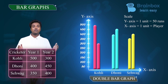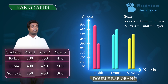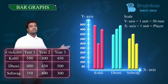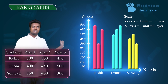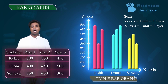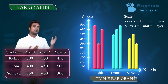But what if you also have to analyze the next year's data? In order to represent this data in the form of bars, we just add the bars of the third year to the previous data. This representation is known as a triple bar graph. This is how data will be represented in a bar graph — any kind of data can be represented this way.